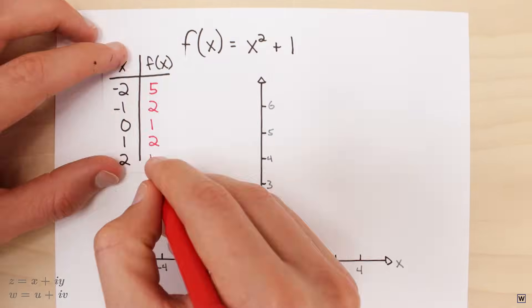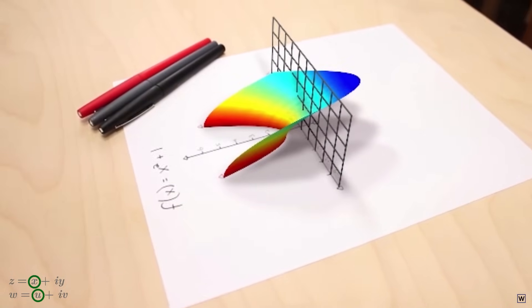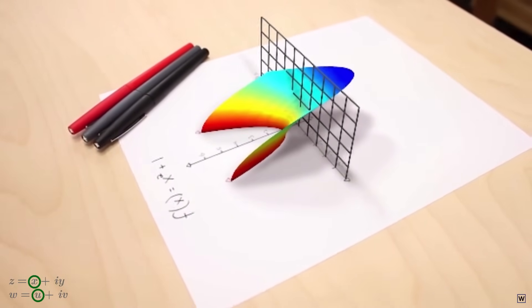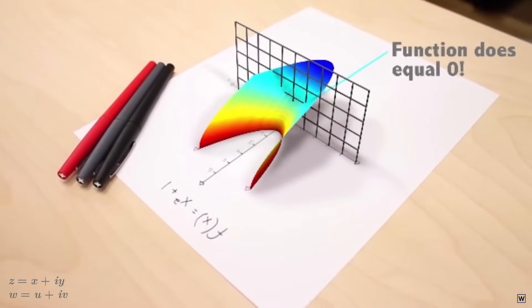The two-dimensional plot we started our discussion with, the one most of us see in math class, only shows two of our four variables, the real parts of z and w. The surface we created back in part one is the result of including one more variable, the imaginary part of z, as the vertical dimension of our visualization.